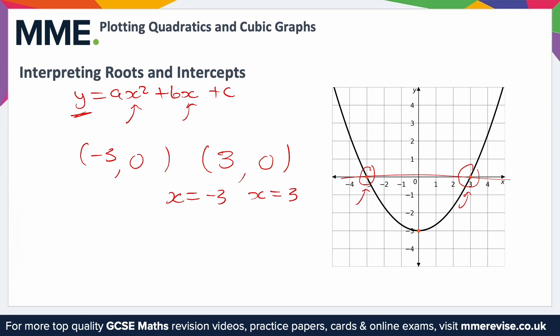The intercepts, or the y-intercept of a quadratic, is the point where it crosses the y-axis. In this case, the point here where y is minus three, so the y-intercept is minus three.